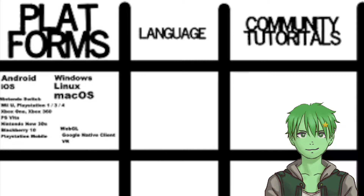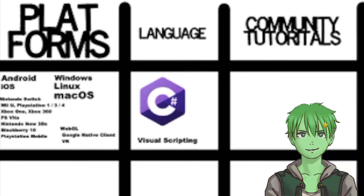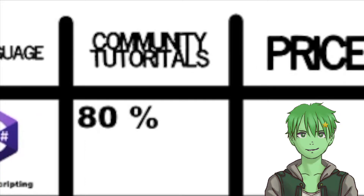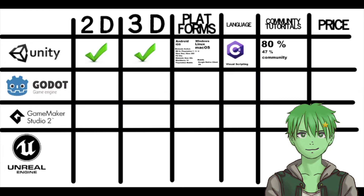The coding language you use with Unity is C#, but the newest version, 2020.1, also supports visual scripting. Unity has a really good and large community — almost 80% of all game engine tutorials out there are Unity tutorials, and almost 47% of game devs use the Unity game engine for making their games.